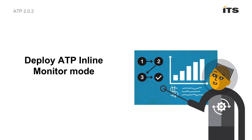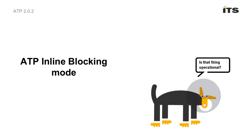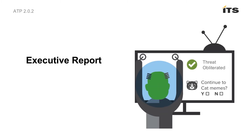ATP Inline Blocking Mode works the same as Inline Monitor Mode in that network traffic passes through the appliance between the endpoints and the internet. However, with Inline Blocking Mode, file downloads, access to websites, and traffic considered malicious are blocked. Only Inline Block Mode provides real-time protection against threats. Note: in this release 2.02, file downloads through FTP protocol are not blocked in Inline Block Mode.